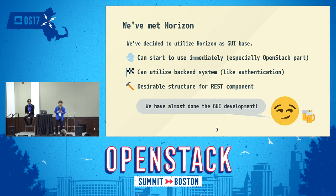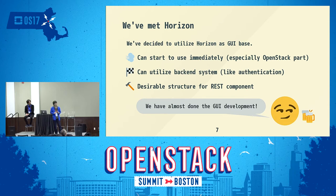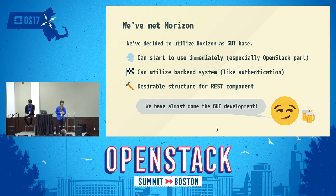Because Horizon is nearly the native OpenStack GUI, and we are also using OpenStack main components — Nova, Cinder, and Keystone — as the authentication backend, Horizon had the highest affinity with all of them, especially the OpenStack part. And even for our original component part, we thought Horizon has a desirable structure for integrating REST-based components. So at that time, we thought we had almost done the GUI development just by finding Horizon. But as development progressed, some more problems were found.